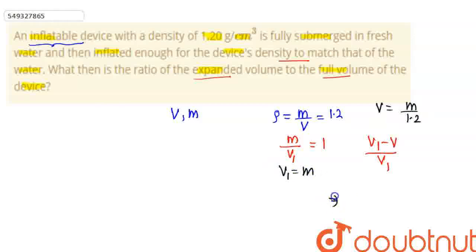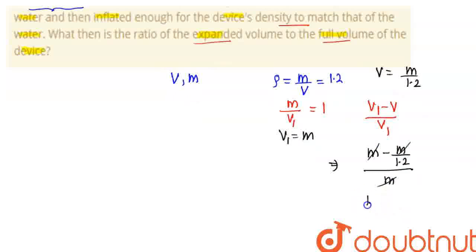Put this in the ratio: m minus m upon 1.2 divided by m. M cancels, giving us 1.2 minus 1 divided by 1.2. That's 0.2 divided by 1.2. We will solve it.